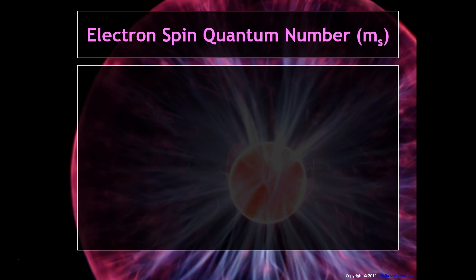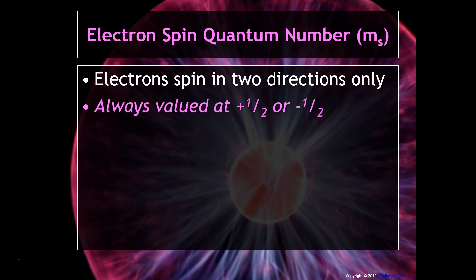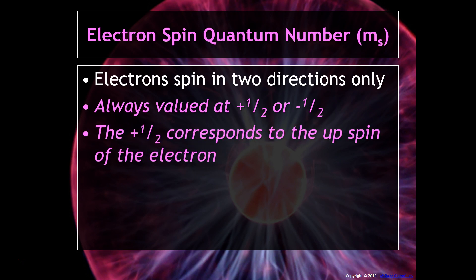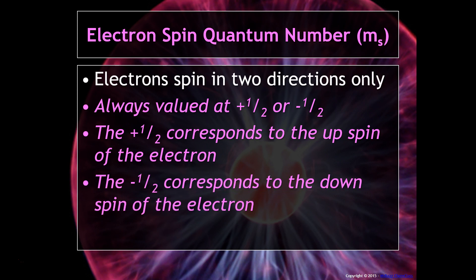There's one last one. Hopefully you're holding on. I know this seems confusing, but it'll get a little bit clearer once we do some examples, so just bear with me. The last one, which is probably the easiest one, is the electron spin quantum number, or M sub S. We mentioned, according to the Pauli principle, that electrons spin in two directions only. So that means your M sub S value could either be plus 1 half or minus 1 half. The plus 1 half means that it is an upspin, and the minus 1 half means that we're talking about a downspin.